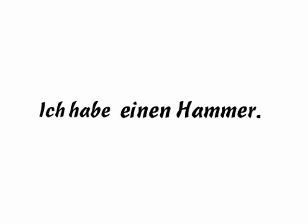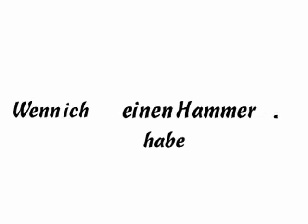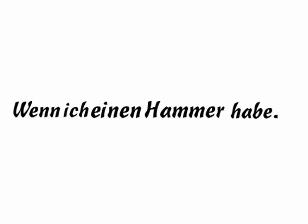Now we want to turn the first sentence into a condition. The German for 'if' is 'wenn'. So we might say 'Wenn ich habe einen Hammer' — but no, we don't. Because it's now a subordinate clause, and the finite verb comes at the end of a subordinate clause. That means it becomes: Wenn ich einen Hammer habe. That's quite reasonable.